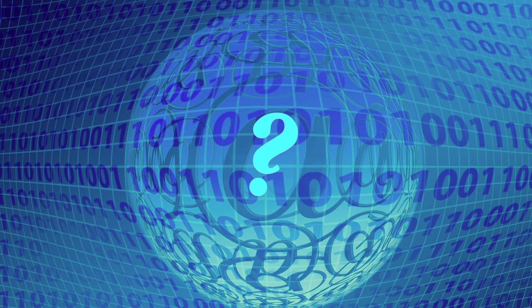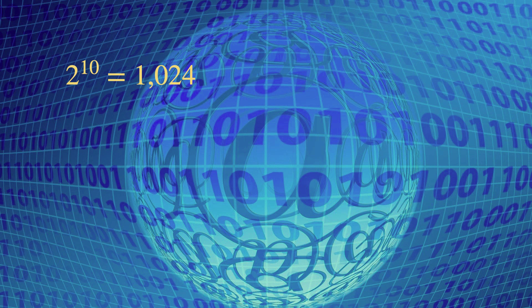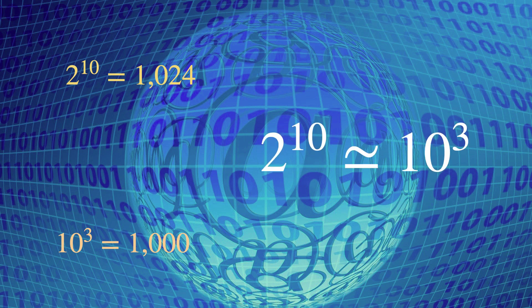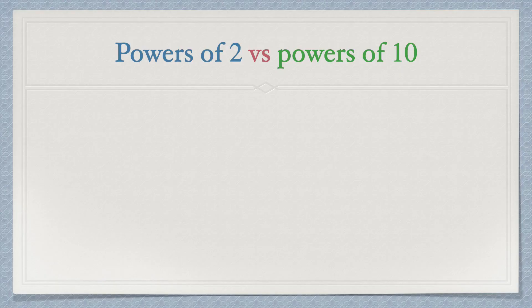But why do we call them kilo, mega, etc.? This is because 2 to the power 10 is 1024 and 10 to the power 3 is 1000. So 2 to the power 10 is not far from 10 to the power 3 — it is the same order of magnitude. So now let's see powers of 2 versus powers of 10.